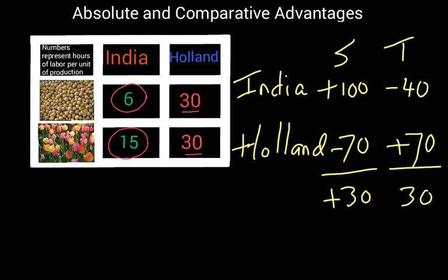So even in the case where one country is more efficient in making both products — in other words, it has an absolute advantage in making both products — it is still a good idea for each country to specialize, because each country has a comparative advantage in making one product. India has a comparative advantage in making soybeans and Holland has the comparative advantage in making tulips. Total world production goes up by 30 units for soybeans as well as 30 units for tulips, and if these countries trade and split the difference, they will both be better off.